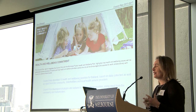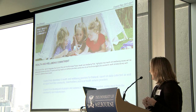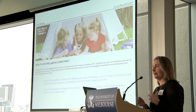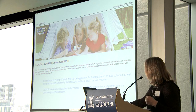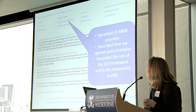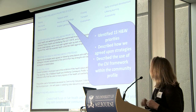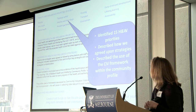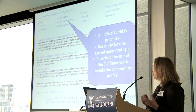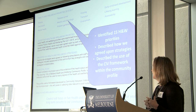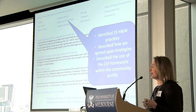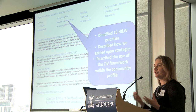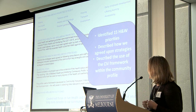We started the introduction of our document with our health and wellbeing commitment and talked about how, through the evidence and engagement, we'd identified 15 health and wellbeing priorities. We showed how we agreed upon the strategies, and throughout described the use of the CIV framework within the community profile as the evidence behind those strategies.